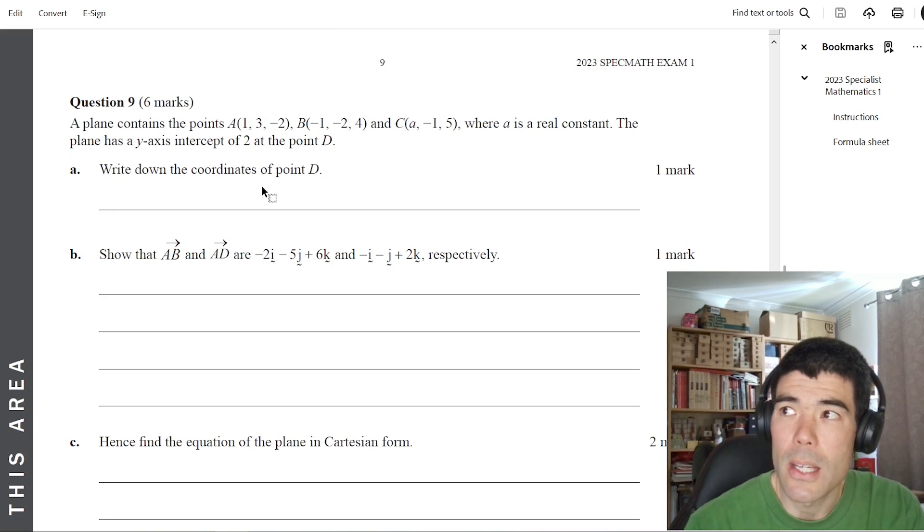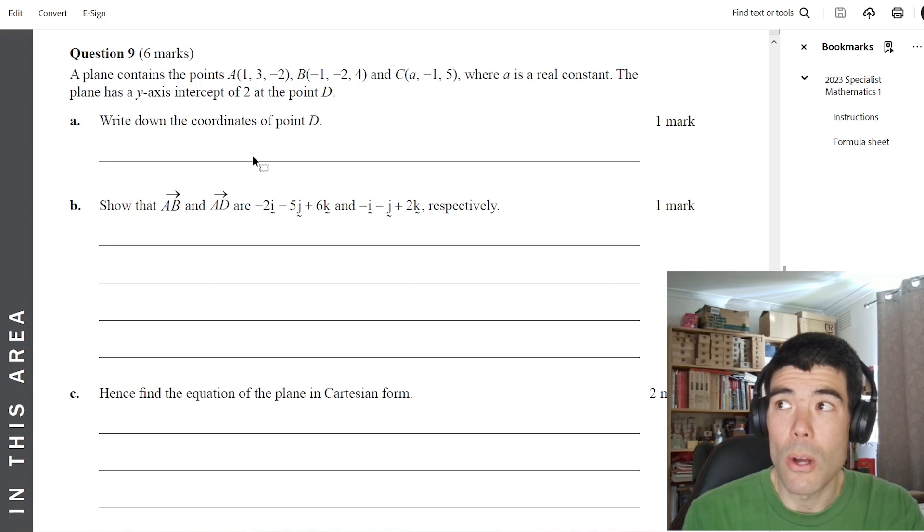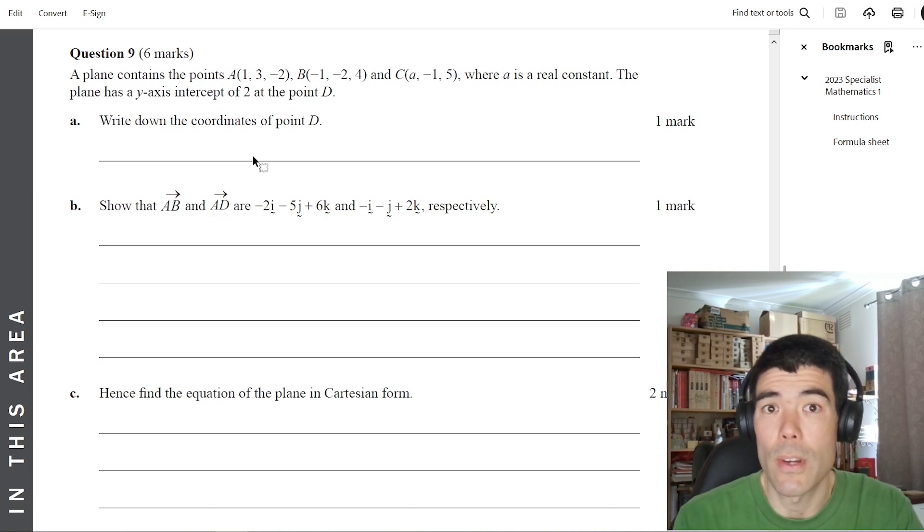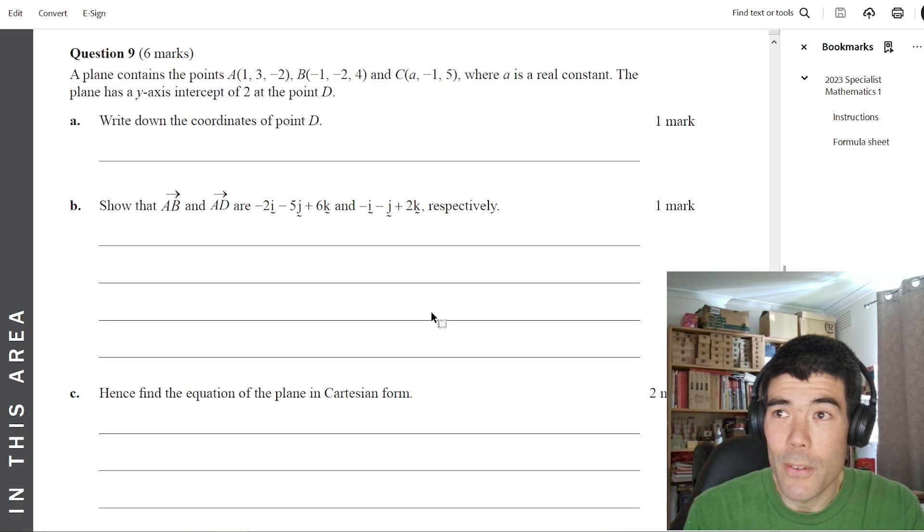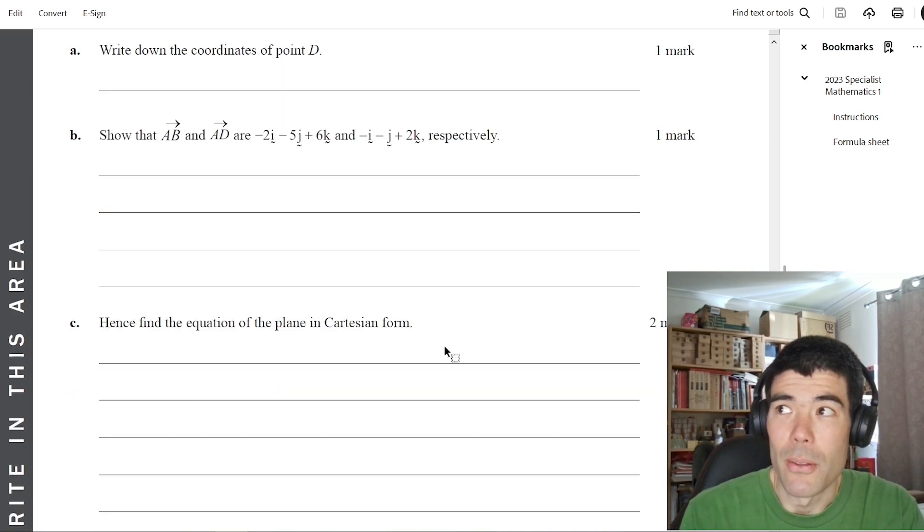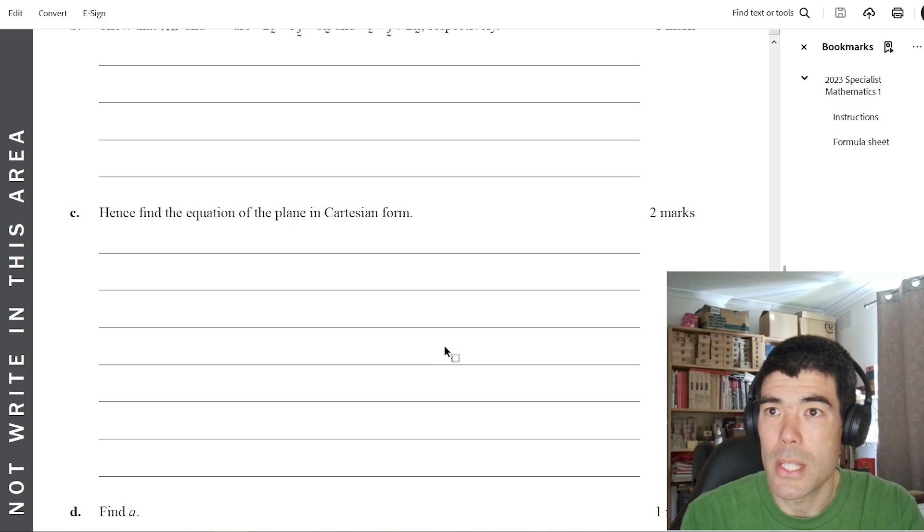But if we just look briefly, question nine is a plane, a vectors question about a plane in 3D space, six marks here, and then also a whole extended response question in exam two as well. So lots of marks on vectors and particularly lines and planes in 3D space, cross product, normals to planes, that sort of thing. Well worth practicing, well worth your time, much more so than pseudocode, for example, where we just saw one multi-choice question in both this exam and the Northern Hemisphere exam two.